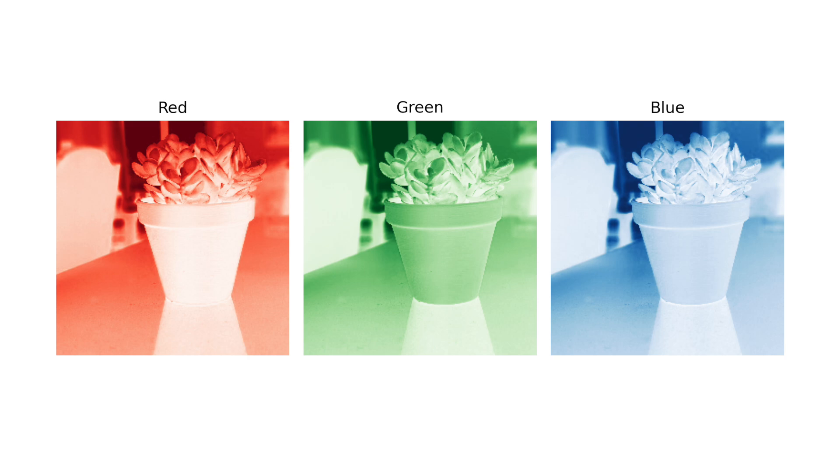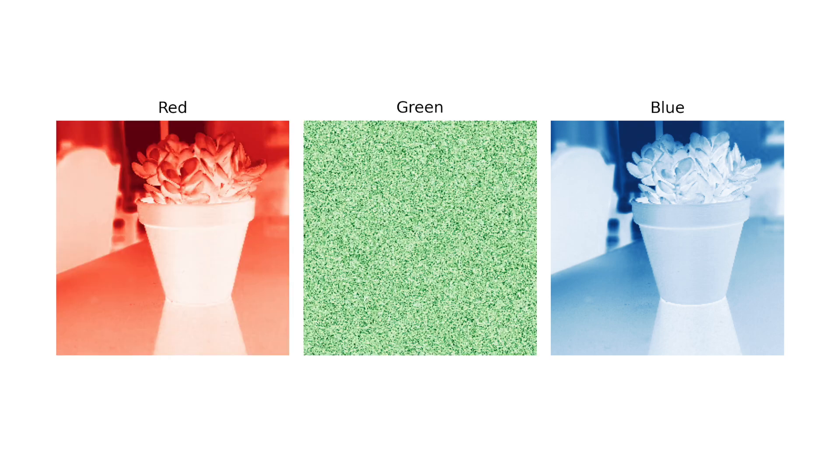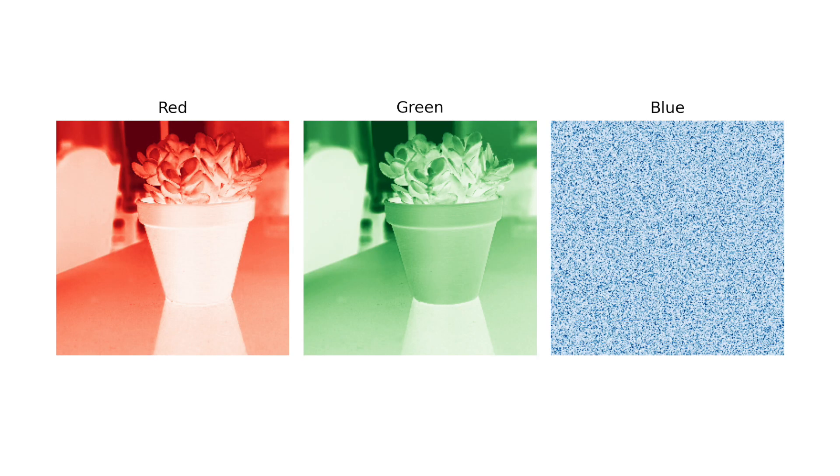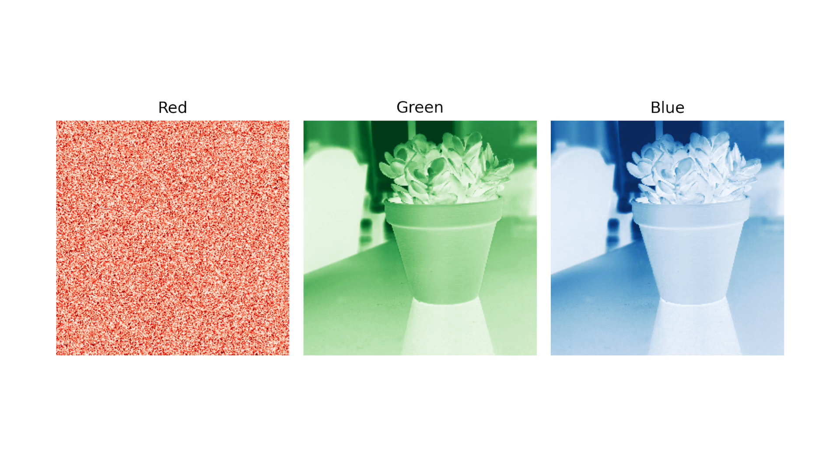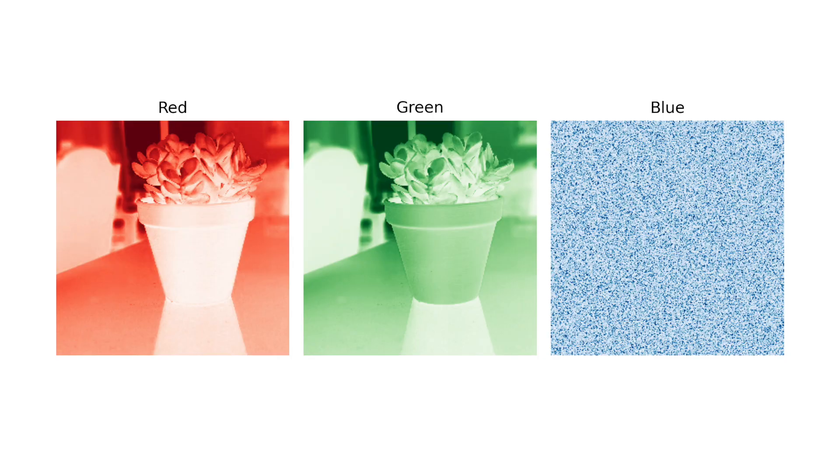Permutation channel importance works by permuting or shuffling the pixels in a given channel. We do this for every image in our dataset. Comparing the performance of a model on the data before and after it is permuted will tell us whether it uses that channel to make predictions.